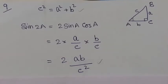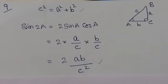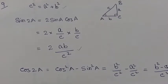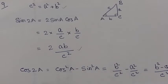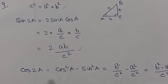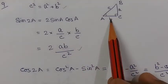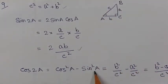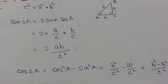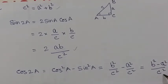Then we have to find the value of cos 2A. Now cos 2A has three formulas: cos²A − sin²A, or 2cos²A − 1, or 1 − 2sin²A. Here we apply cos 2A = cos²A − sin²A. Substituting cos A = b/c gives b²/c², and sin A = a/c gives a²/c². Taking c² as LCM, the answer is (b² − a²)/c².